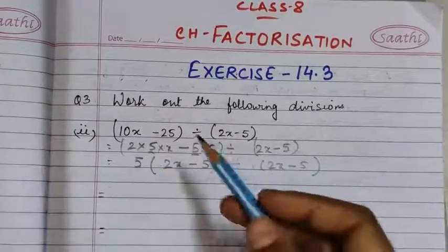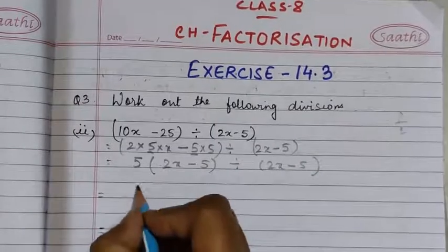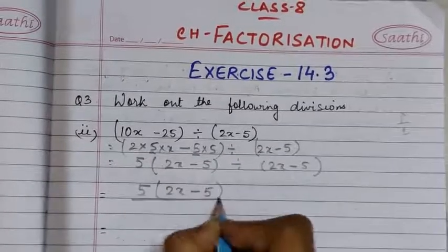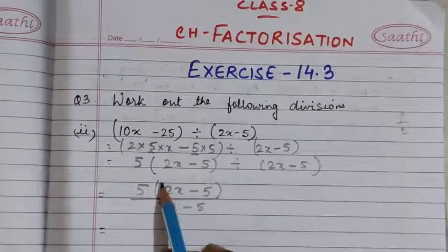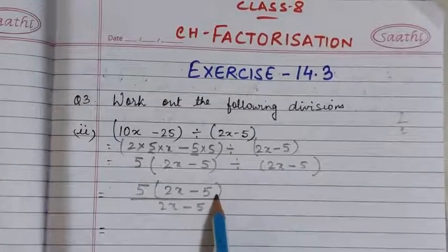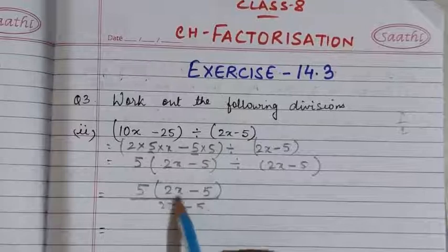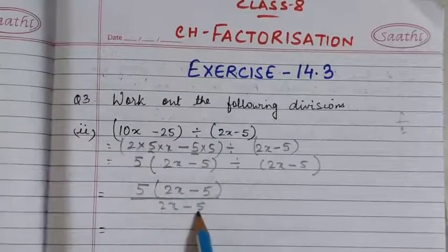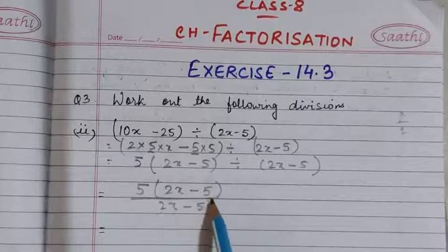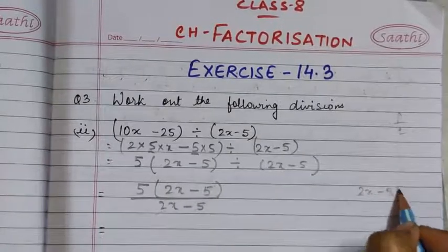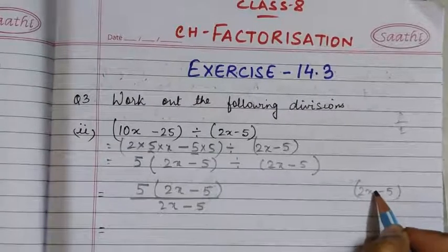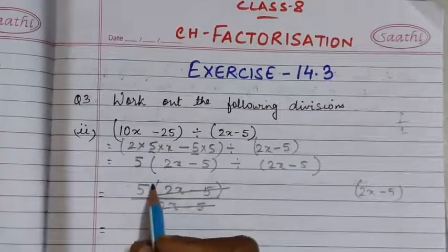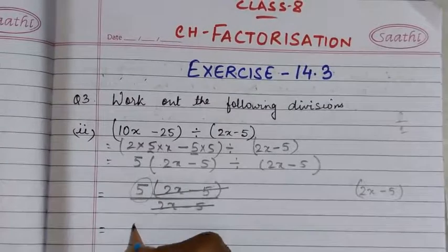Now we will write this division in the form of P by Q. So it will be 5 into (2x minus 5) by (2x minus 5). You see the expression 2x minus 5 in both numerator and denominator is the same. So we are going to cancel the complete binomial together — we are not going to cancel 2x with 2x or 5 with 5, because we treat 2x minus 5 as one whole complete expression with no multiplication sign in between. So we cancel 2x minus 5 with 2x minus 5, and we are left with 5. Our answer is 5.